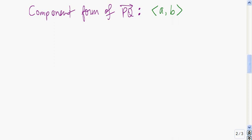Often when we work with vectors algebraically, we need to find what's called the component form of the vector. The component form of vector PQ uses angle bracket notation. The first number tells you how far you need to go in the x-direction to get from point P to point Q, and the second tells you how far in the y-direction. Let me illustrate this through an example.